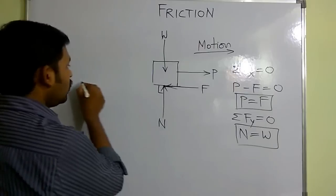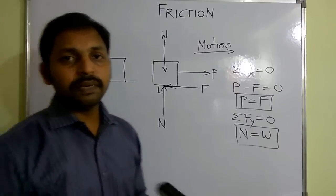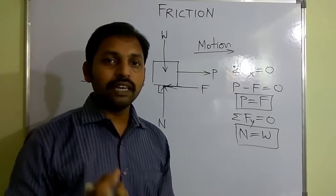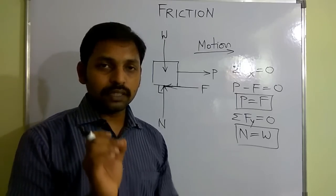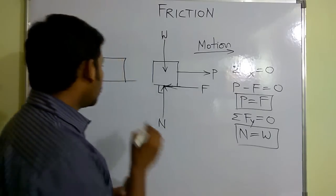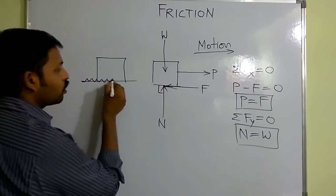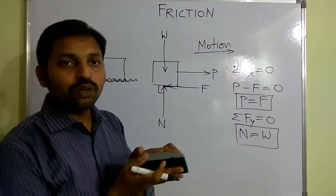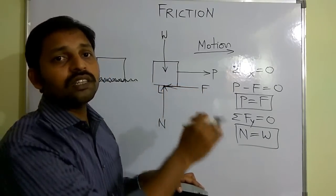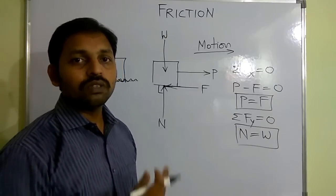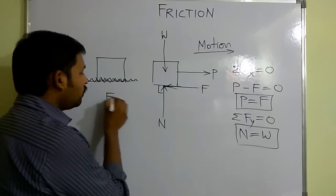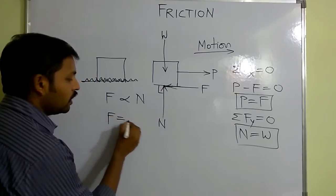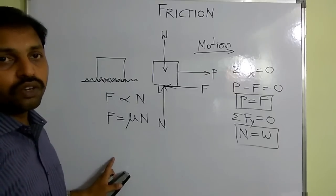What is the reason for this frictional force? When I observe a surface, it may appear smooth, but everything is made up of molecules. Even a finished surface, when observed under a microscope, will show microscopic projections. The horizontal surface and the lower portion of the block both have microscopic projections. When these projections are locked and force is applied, a resisting force is developed — that force is the frictional force. This frictional force is always proportional to normal reaction, so F = μN, where μ is called the coefficient of friction.